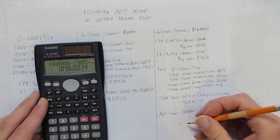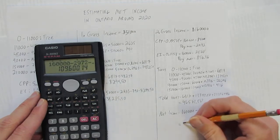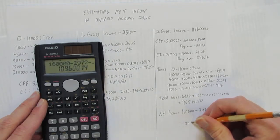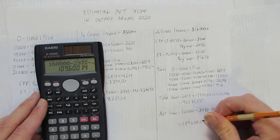And there it is. Their final net income after taxes, CPP, and EI, is $109,600.14.